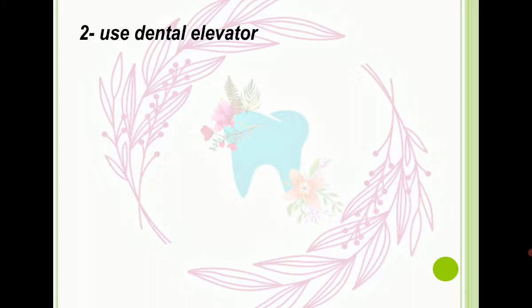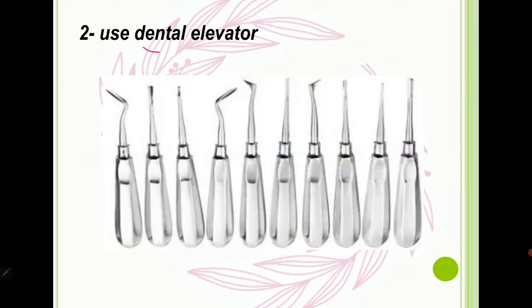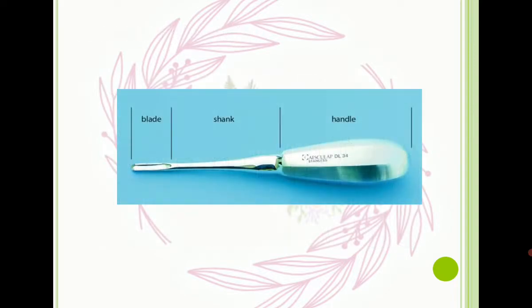After anesthesia we have to wait for approximately 15 minutes, and after that we can continue our extraction procedure. In the second step we have to use a dental elevator. You can see a picture here containing many types of dental elevator. Before introducing each of them, let's check the parts of one dental elevator — it has a handle, shank, and blade.